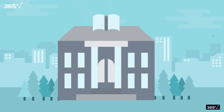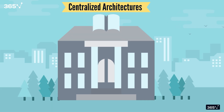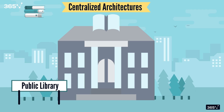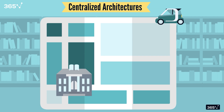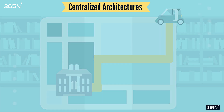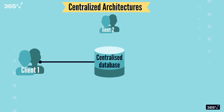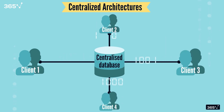First up are centralized architectures. Imagine a city that has only one public library, and all possible books for the entire city are stored there. Anyone needing a book from any corner of the city will need to travel to this library to get the information they need, because there are no alternatives. That is centralized data architecture in a nutshell — all data flows into and is stored in one location, usually a data warehouse or a centralized database, and all downstream components and systems access data from this singular source.